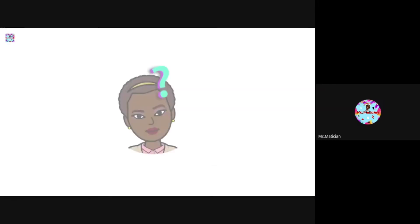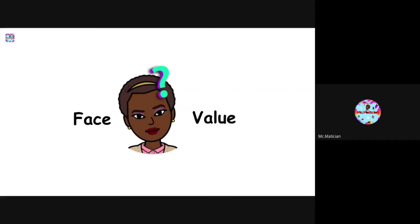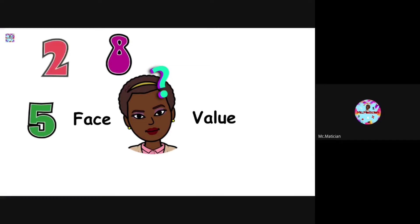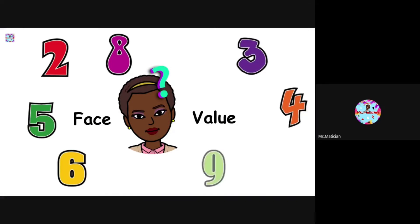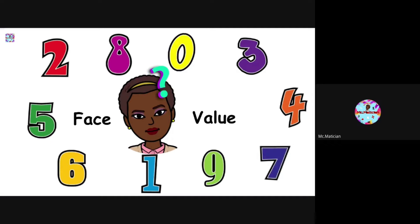Let's start with face value. Face value is the value of the digit itself. For example, 8 is the face value of 8. Similarly, 5 is the face value of 5, 2 is the face value of 2, 6 is the face value of 6, 3 is the face value of 3, 4 is the face value of 4, 9 is the face value of 9, 1 is the face value of 1, 0 is the face value of 0, and 7 is the face value of 7.